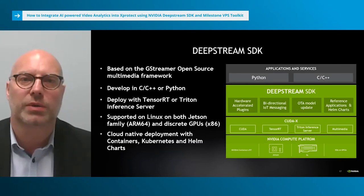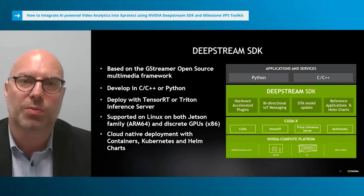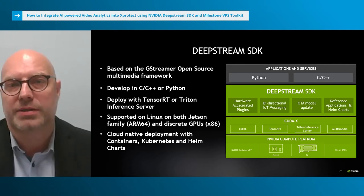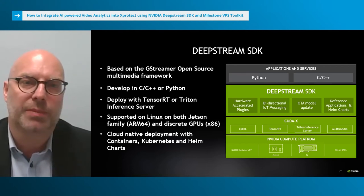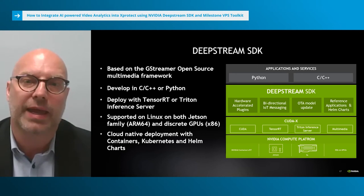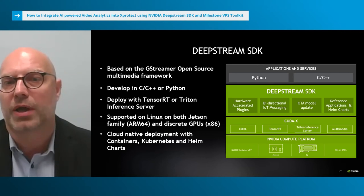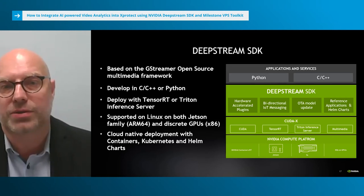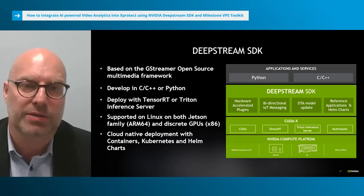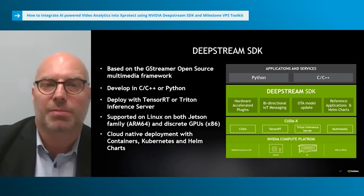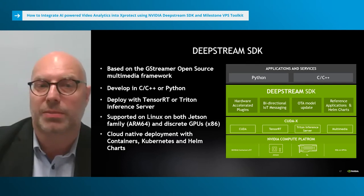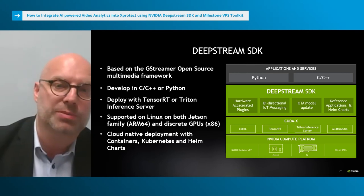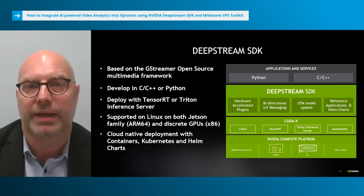DeepStream is a streaming analytics toolkit to build AI-powered applications. It is based on the GStreamer open source multimedia framework and supports application development in C, C++, and Python. DeepStream can be deployed on a wide range of devices, from embedded edge devices running on the Jetson platform to larger edge servers or data centers using discrete GPUs such as a Tesla T4. DeepStream applications can be deployed in containers and orchestrated on the edge using Kubernetes. The core SDK consists of several optimized hardware accelerator plugins, and DeepStream also ships with several out-of-the-box security protocols and reference applications in both Python and C/C++.